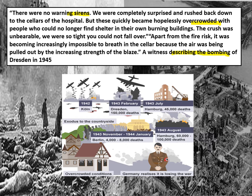Some particular bombing raids and their results: in February 1943, the bombing of Dresden killed around 150,000 people. In July 1943, the bombing of Hamburg caused another 45,000 deaths, with further Hamburg bombings later that year causing around 100,000 more deaths. Cities like Berlin were also bombed. The whole point was to crush the German spirit and make them end the war, just as the Germans had done to Britain in 1940. We're now going to watch a short documentary clip about the bombings.